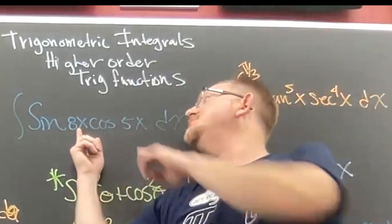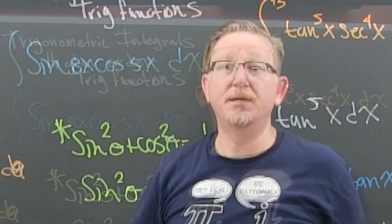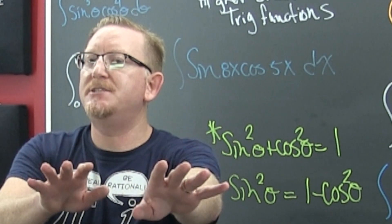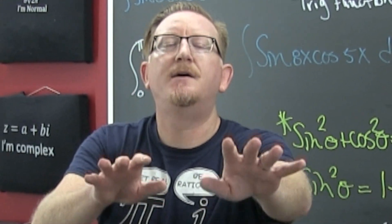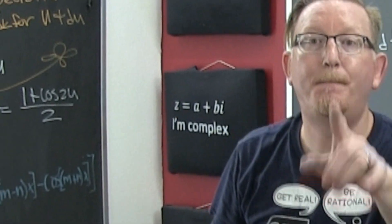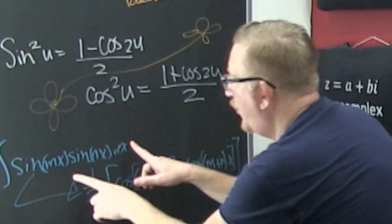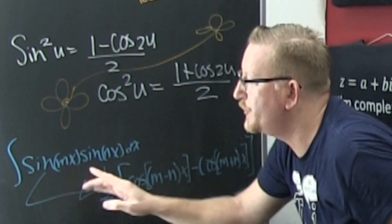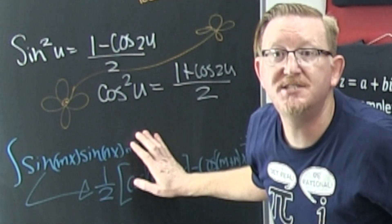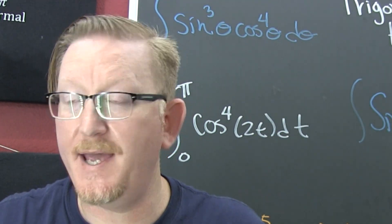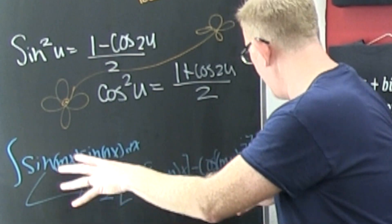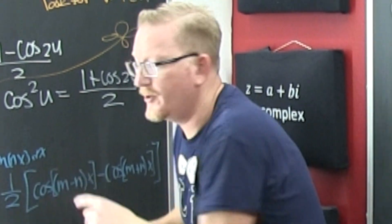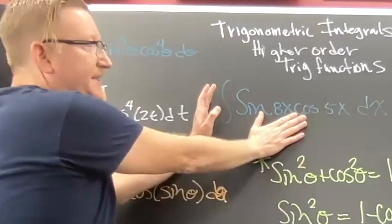Watch out for these — your arguments aren't the same. Whenever I teach this, I usually skip this section, but there is a section where if your arguments are different, this is obscure. Just know that these exist and you'll look up the sum and difference formulas. Rare, but if you see that, know those exist.